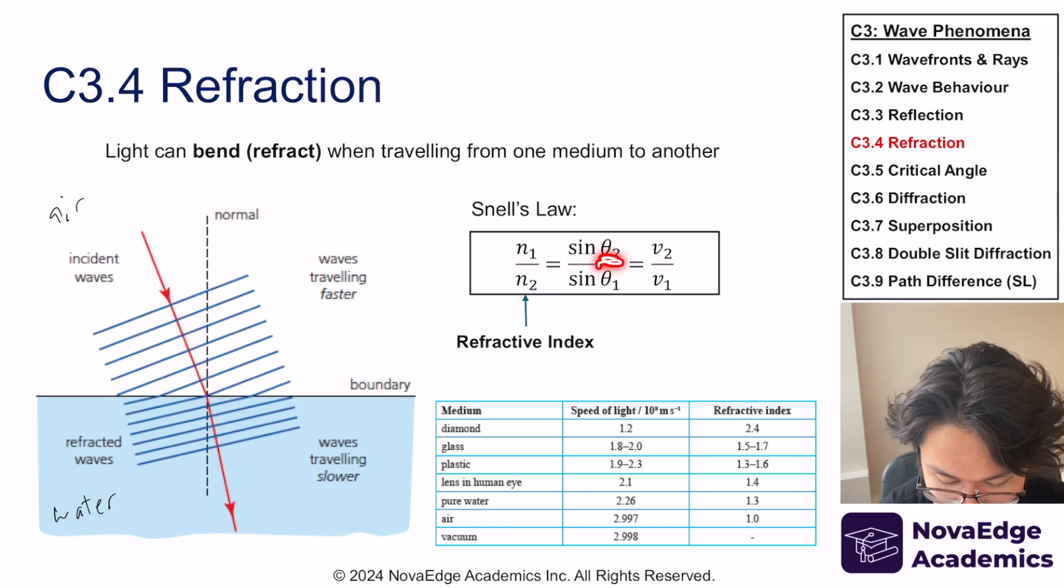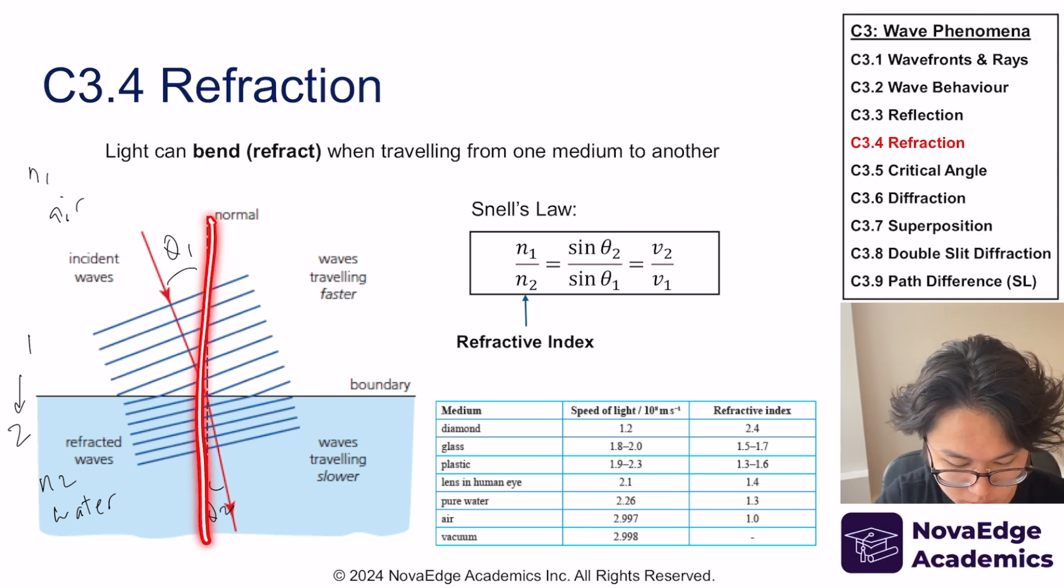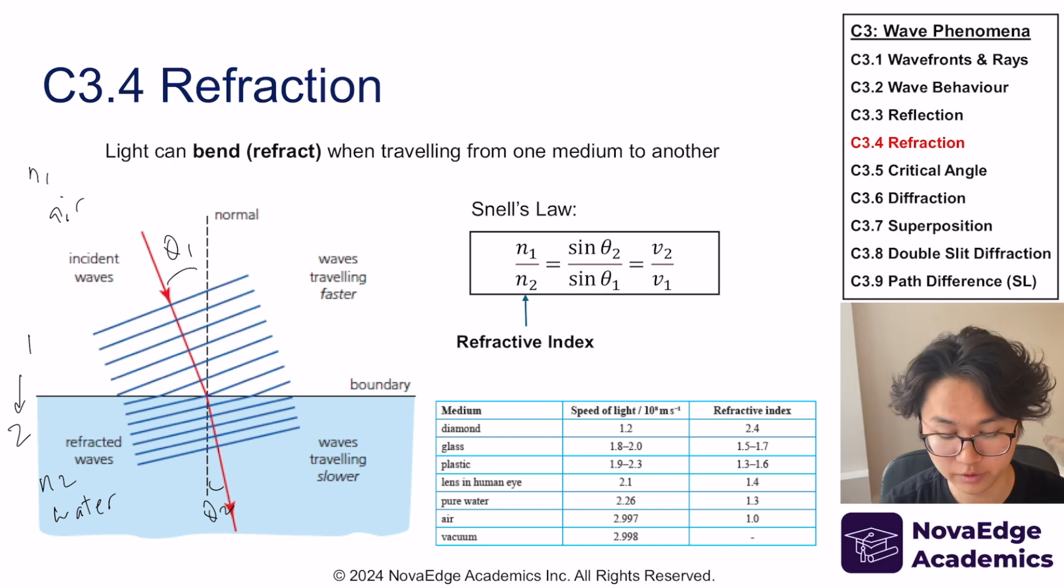For example, air is the base mark so it's one. Pure water is 1.3, diamond is 2.4, etc. So using this material property we can predict how much it bends. And these thetas, where do these thetas come from? We have n1 which is air here and n2 which is water. Theta 1 is here and theta 2 is here. We always measure the angle from the normal, same way as reflection. So how can I find theta 2? I isolate it and solve for it.